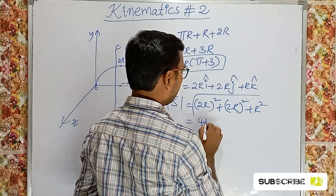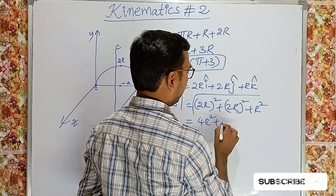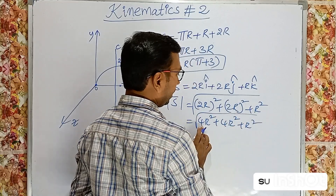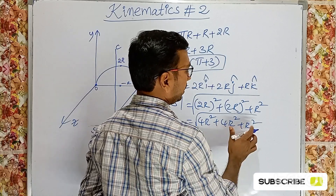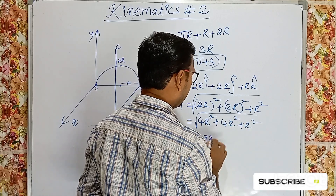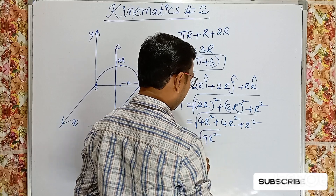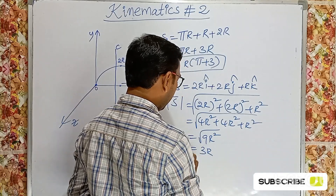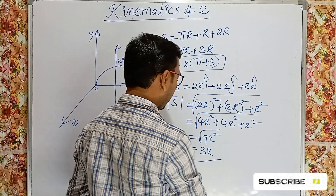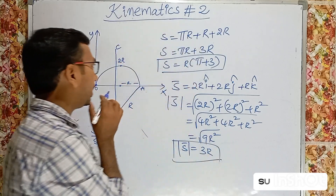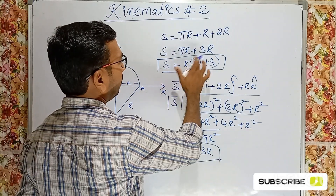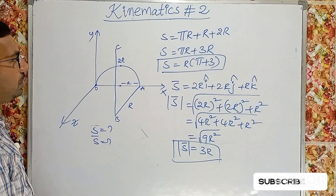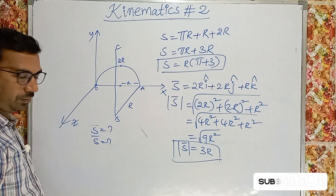Calculating the magnitude: 4r² + 4r² + r² = 9r². So the magnitude is √(9r²) = 3r. Therefore, displacement is 3r and distance is r(π + 3). This completes the problem from lecture number one.